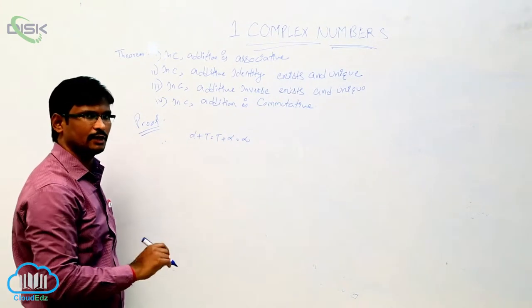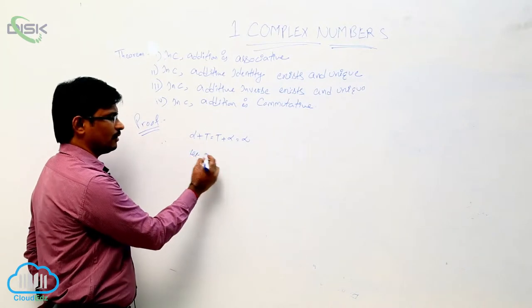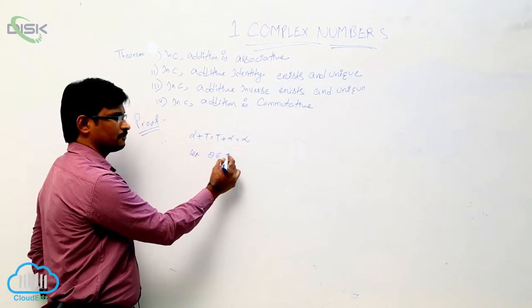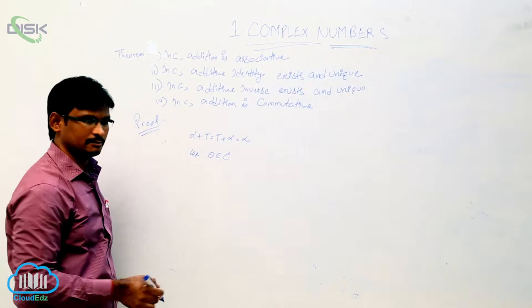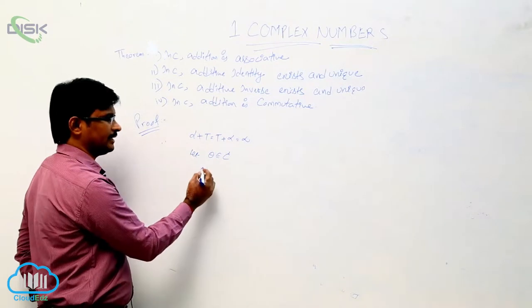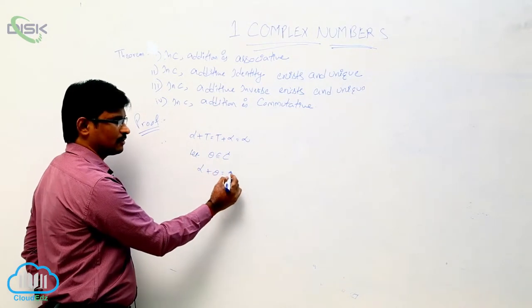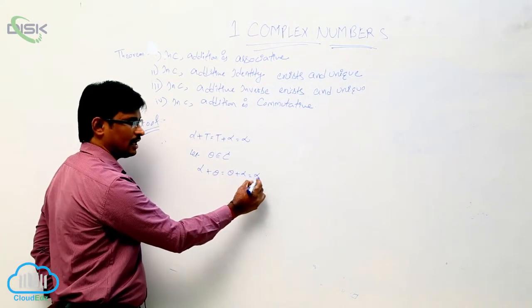Now we will prove the uniqueness. Let one more number which belongs to the complex numbers — let it be theta — as one more identity. So alpha plus theta equal to theta plus alpha equal to alpha.